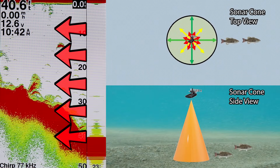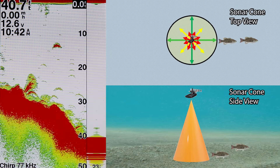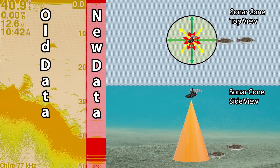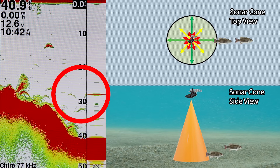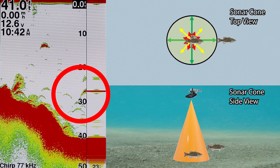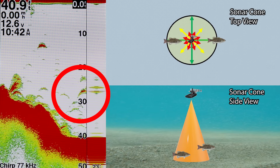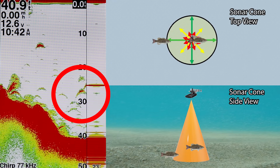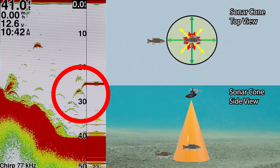Our fish finder's display moves from right to left — everything on the right-hand side is new, fresh data, and everything on the left is past history. On the right-hand side of the screen you'll see our first fish starting to enter the transducer cone. Now the first fish is directly beneath the transducer. The second fish is starting to enter the transducer cone while the first fish begins to make its exit. Now the second fish is directly beneath the transducer and the first fish is out of the cone — it's somewhere outside of that zone.